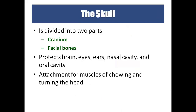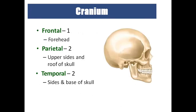In the head, we have the skull, which is divided into cranium and facial bones. The cranium and facial bones protect the eyes, ears, brain, nasal cavity, and oral cavity. There are also muscles attached for chewing and turning the head. In the cranium, we have the frontal bone — one forehead bone.